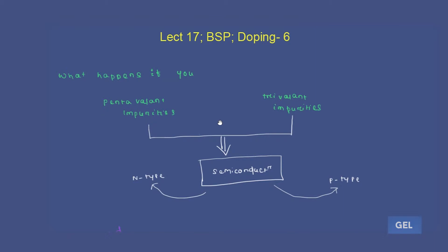We have learned that if we add pentavalent impurities to any semiconductor, that will give us an n-type extrinsic semiconductor. And if we add trivalent impurities to any semiconductor, it will give us a p-type semiconductor.